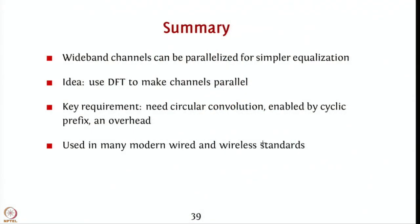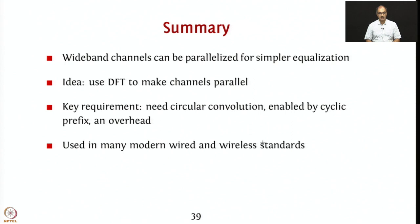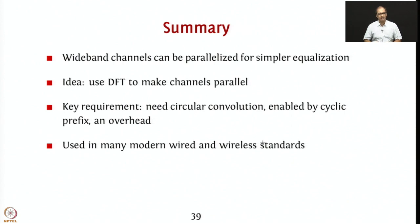To summarize: wide-band channels can be parallelized for simple equalization by putting data in parallel frequency bands, and using the DFT or IDFT is a nice way to make the channels parallel. One key requirement is circular convolution, enabled by the cyclic prefix, which is an overhead. Because of its ease of implementation and several advantages, OFDM is used in several modern wireless standards including Wi-Fi, LTE, and wired standards like ADSL use a variant called discrete multitone. In the next lecture, we will go through examples of implementing OFDM on GNU Radio.